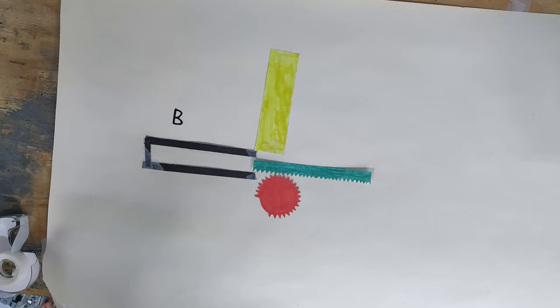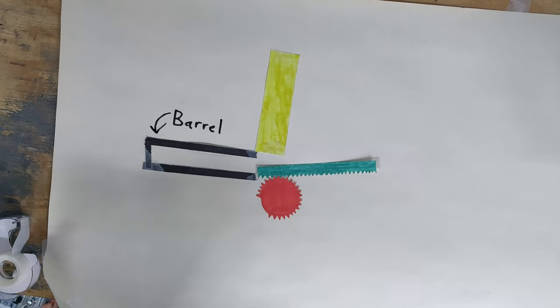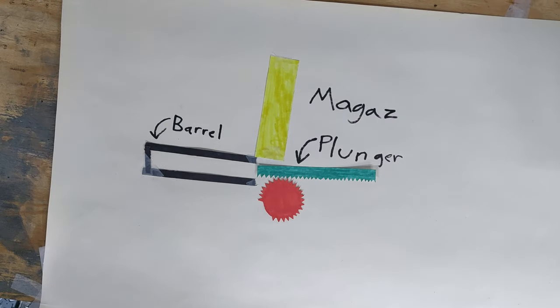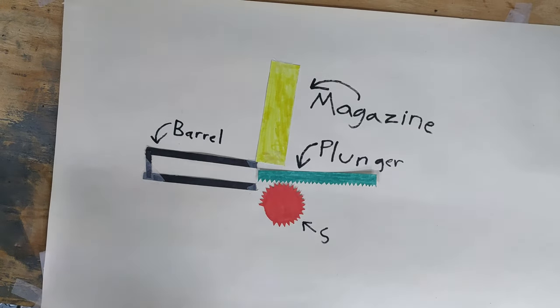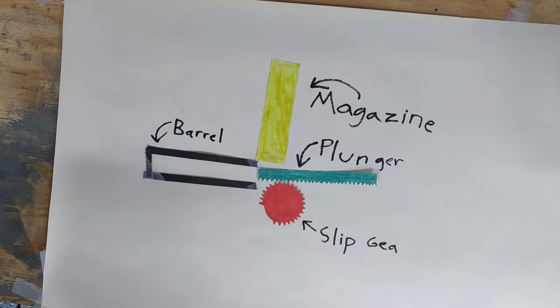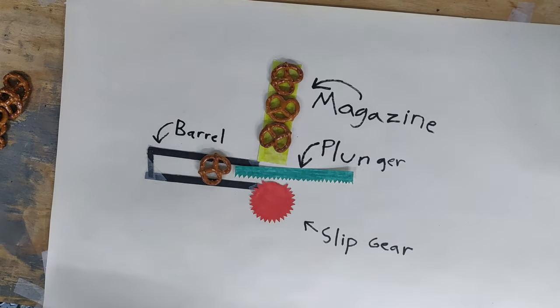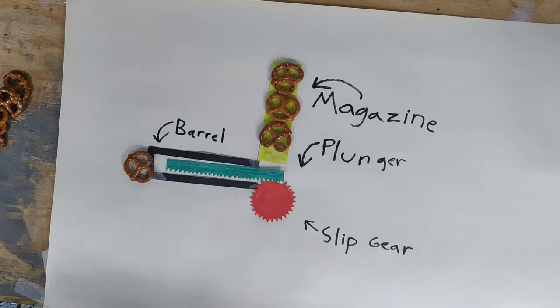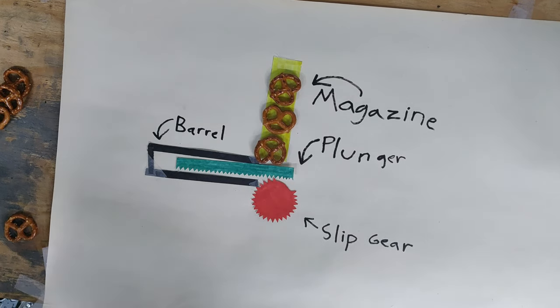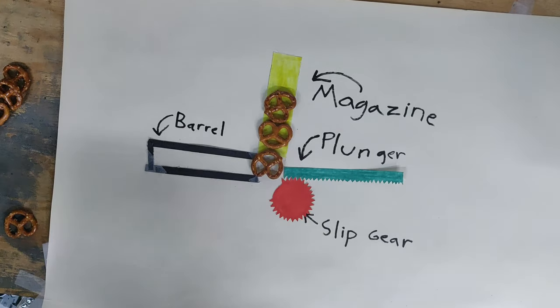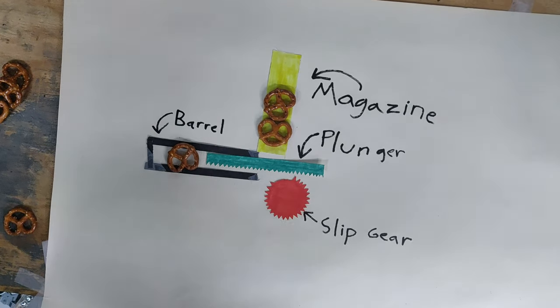The launcher is made up of a few main components. There is a tube that stores the pretzels called the magazine, and then there is a rectangular barrel, a plunger, and a slip gear. The plunger is pulled back against some rubber bands by the slip gear. When the plunger lines up with the smooth section of the slip gear, the rubber bands launch it forward, shoving a pretzel through the barrel and into, well, my face. At this point, more pretzels fall down from the magazine into the barrel, and the system resets.